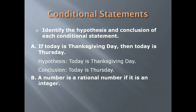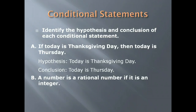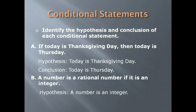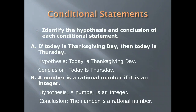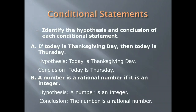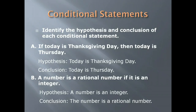This makes sense because we know that Thanksgiving falls on a Thursday. Another example: A number is a rational number if it is an integer. The word 'if' tells you that the second half of this sentence is the hypothesis: 'a number is an integer.' The conclusion is 'the number is a rational number,' since integers are a subset of the rational numbers.